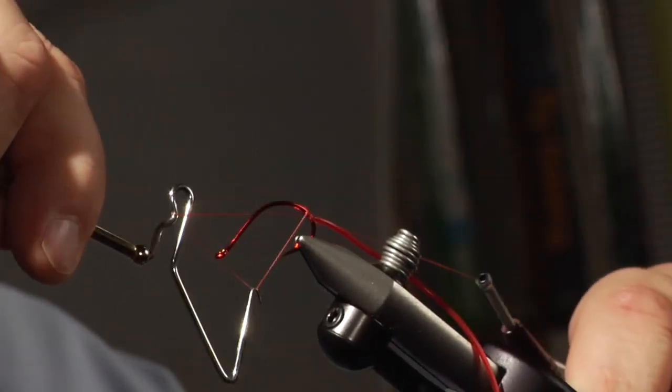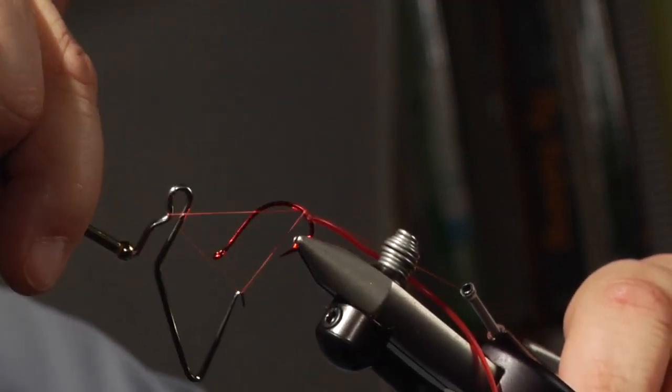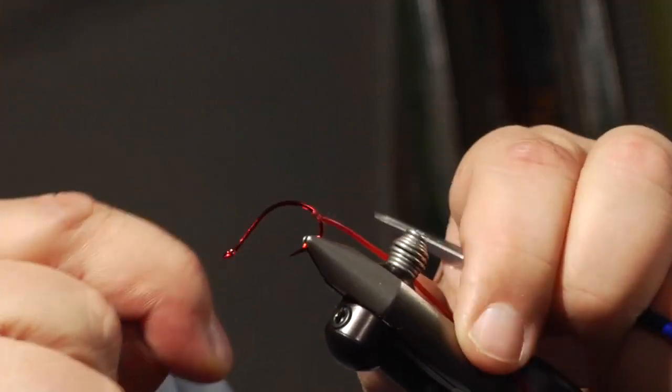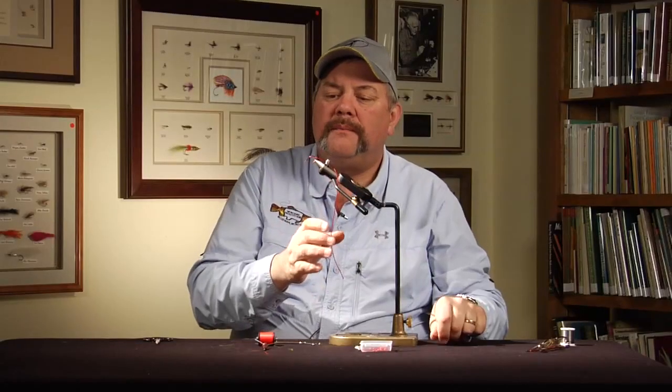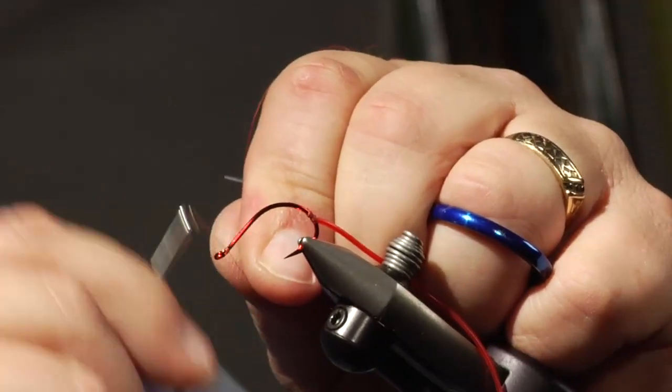I take and tie this on there. It's a little bit strange to do this. I like to tie a whip finish on that. I usually apply head cement, but I don't have any right now. I just break the thread. Now what I'm going to do is I'm going to come up to the eye and tie that thread back in.